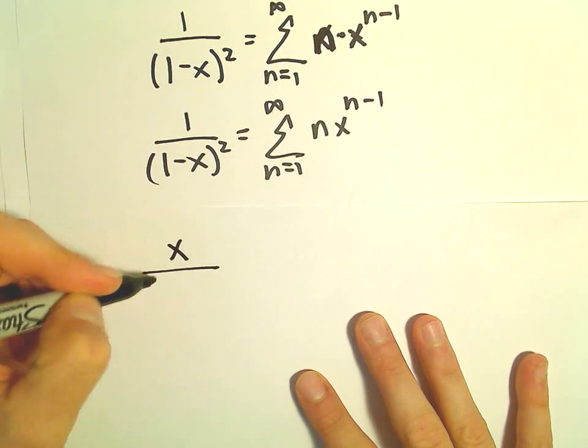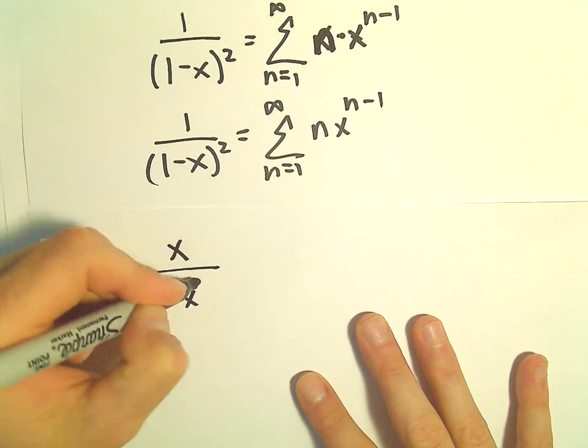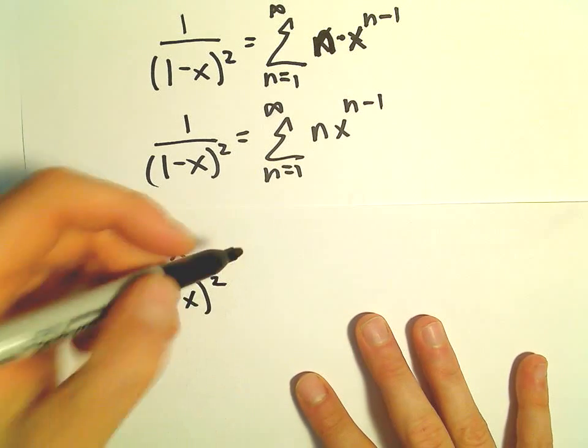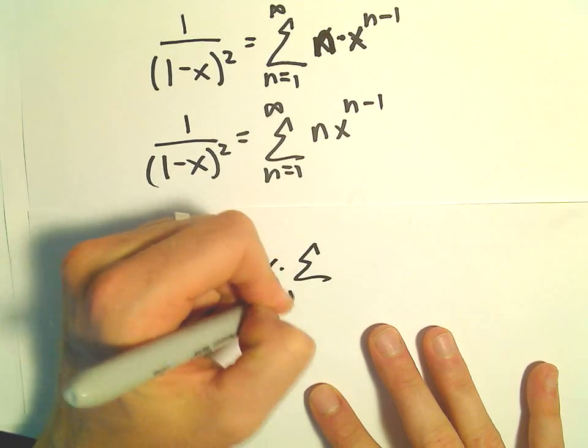So on the left side we would have x times 1 minus x squared. And on the right side we can also multiply by x.